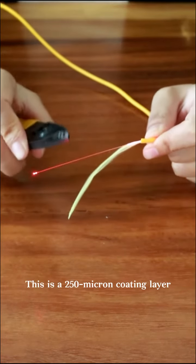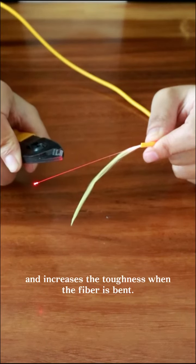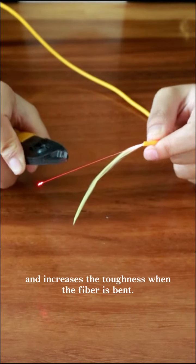This is a 250 micron coating layer. It protects the fiber and increases the toughness when the fiber is bent.